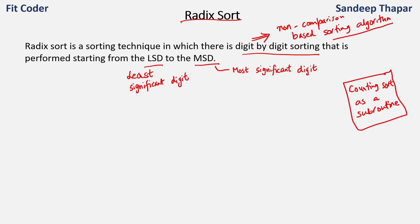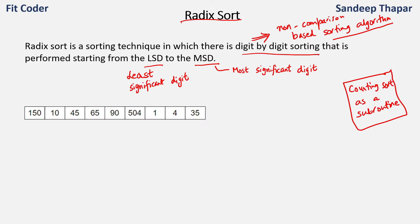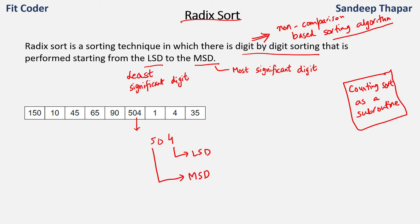We perform digit-by-digit sorting starting from the least significant digit to the most significant digit. Let's take an example. We have these numbers starting with the smallest value of 1 and the largest value of 504. If we take 504, when we talk about LSD, 4 is the LSD and 5 is the most significant digit. We sort the digits starting from the right. Radix Sort is performed in iterations, and in each iteration we call Counting Sort to sort the digits at that position.